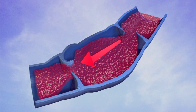This pooling of blood, also referred to as reflux, causes pain, heaviness, bulging veins, skin changes, superficial blood clots, and occasionally ulcerations in the leg.